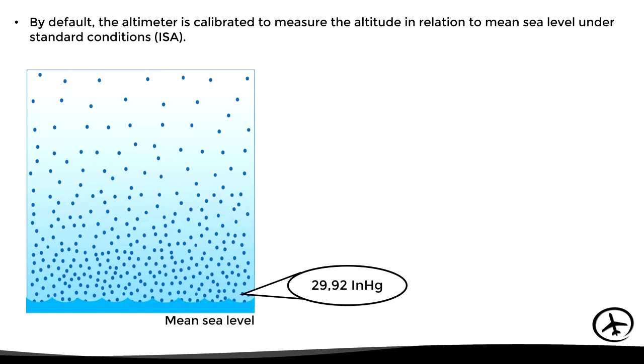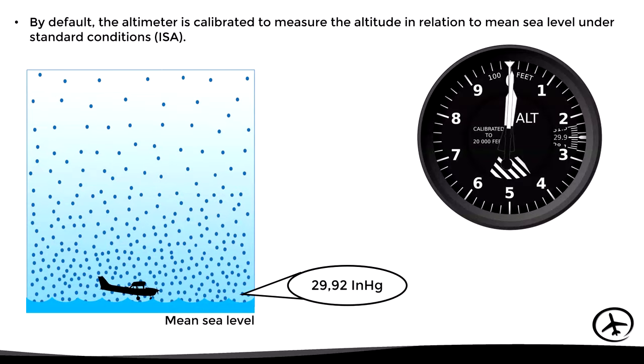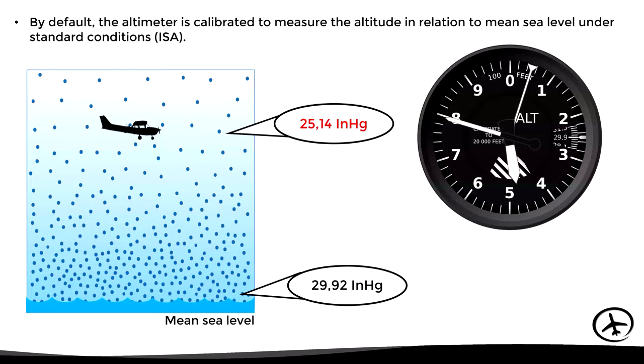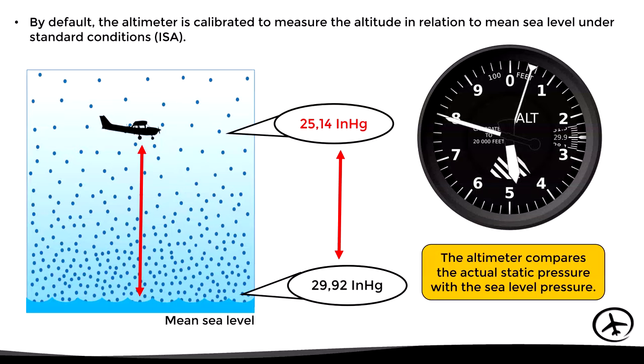If the altimeter senses a static pressure of exactly 29.92 inches of mercury, it will read zero feet, since that is the barometric reference level. Now if the aircraft starts to climb, the static pressure will decrease and the altimeter will show an increase in altitude. For example, if the aircraft climbs to a point where the static pressure is 25.14 inches of mercury, the altimeter compares this with the reference pressure of 29.92 and based on the resulting pressure difference calculates the altitude above the reference level.